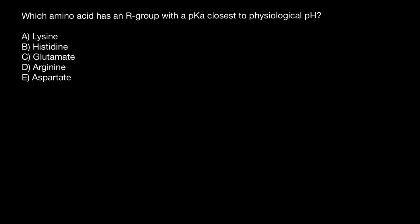Hello, and welcome to Nikolai's genetics lessons. Today's question is: which amino acid has an R group with a pKa closest to the physiological pH?